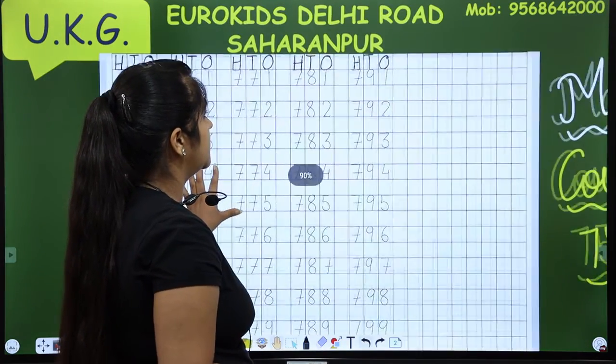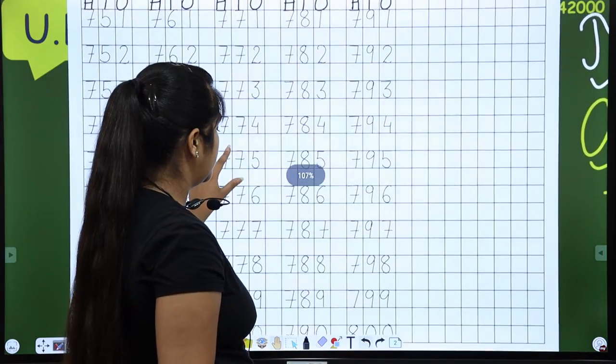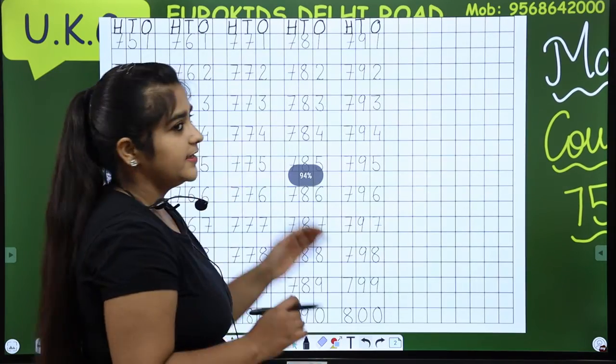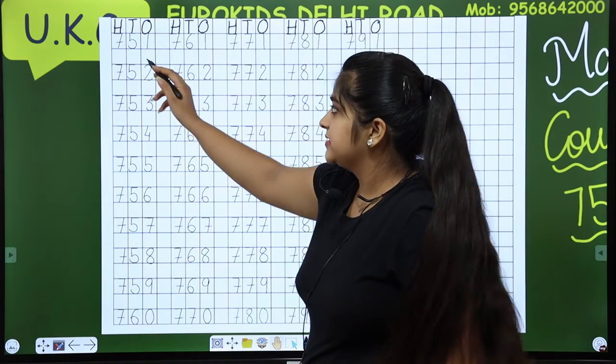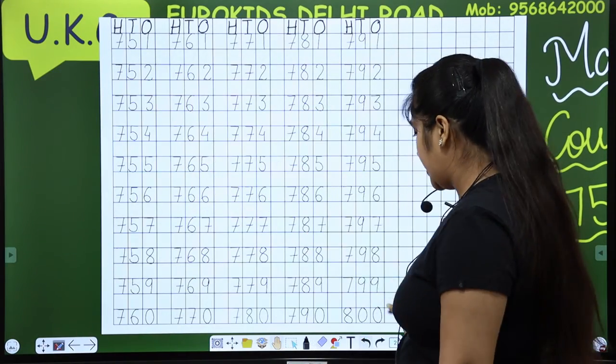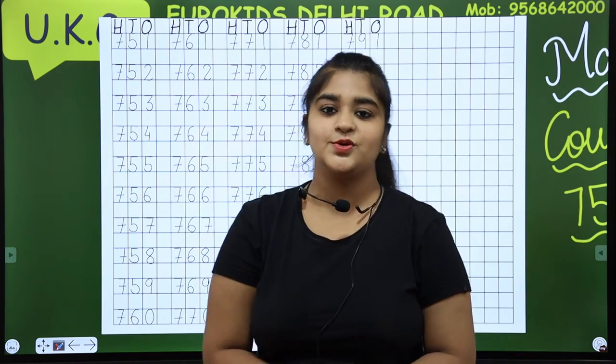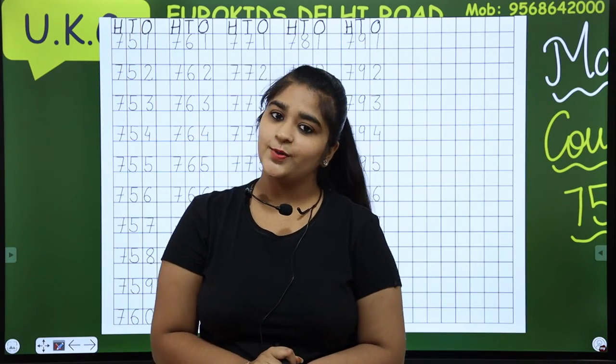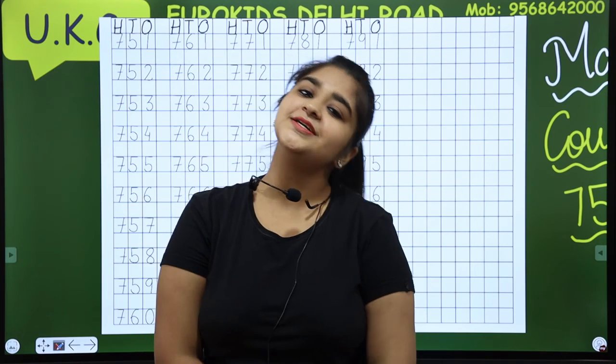Now, you have to complete this work in your classwork notebook. What do you have to do? From 751 to 800 counting you have to do in your classwork notebook. Okay? Hope you all have understood. Thank you.